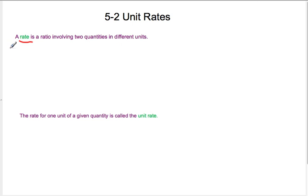So for instance, if your heart beats 150 times, 150 beats in two minutes, that's a rate because we have beats on top and minutes on the bottom. Or maybe your car drives or your family drives in a car 150 miles in three hours.